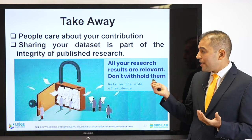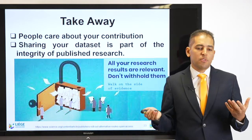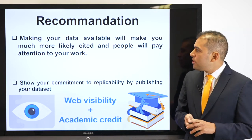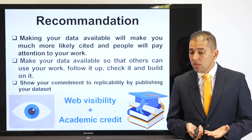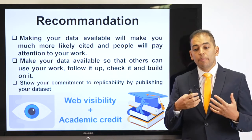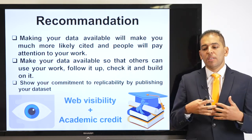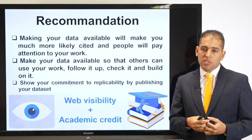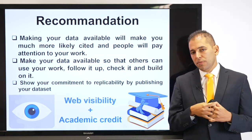All your research results are relevant, so don't withhold them. Walk on the side of evidence. If you have a dataset, even if you couldn't publish something out of it, share it — maybe it can be useful. Making your data available will make you much more likely to be cited and people will pay attention to your work. Make your data available so that others can use, follow up, check, and build on it. Show your commitment to replicability and reproducibility by publishing your datasets, because this is the only way to advance science and have a significant contribution.